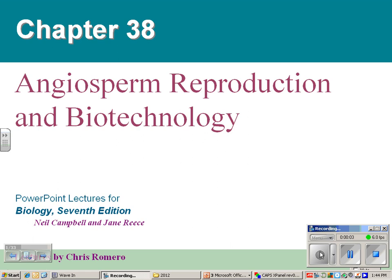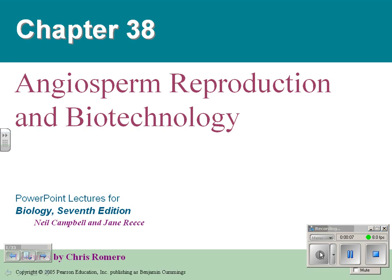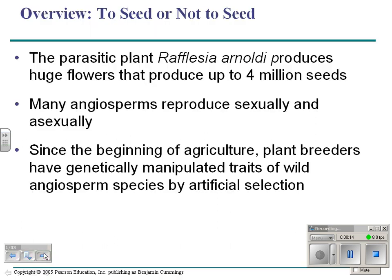Our topic now is flowering angiosperms — remember that angiosperms are flowering plants. We'll cover reproduction, starting with a couple of examples: a parasitic plant produces huge flowers that produce up to 4 million seeds. Many angiosperms reproduce both sexually and asexually, and the last part covers breeding plants and a little bit of biotechnology.